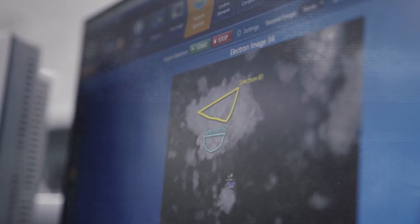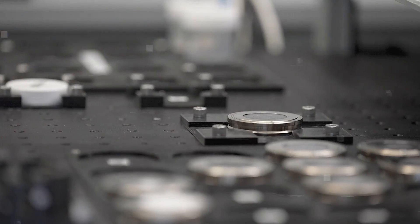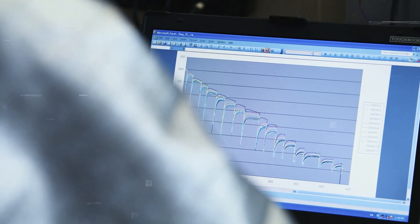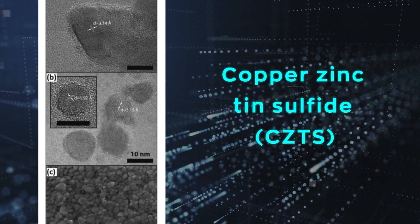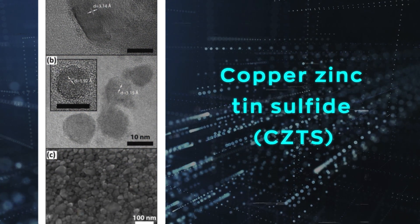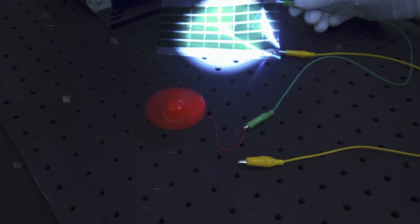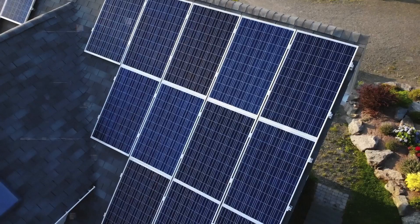Now let's look at some examples of materials that GNoME has discovered. These materials, synthesized and tested in labs using robotics, show promise for use in solar cells, batteries, and computer chips. For instance, copper zinc tin sulfide (CZTS) is great for thin film solar cells. It's cheaper and more flexible than traditional cells and excels at converting sunlight into electricity. GNoME's predictions about its stability and low breakdown risk were confirmed by lab tests.